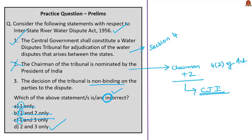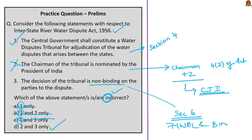The third statement: the decision of the tribunal is non-binding on the parties to the dispute. This is also wrong. According to Section 6 of the Interstate River Water Dispute Act, the central government publishes the tribunal's decision in the official gazette, and this decision shall be final and binding on the states party to the dispute. Statements 2 and 3 are incorrect — answer is option D.